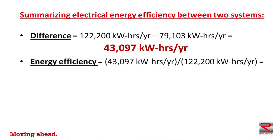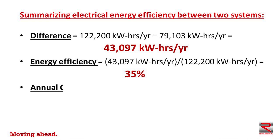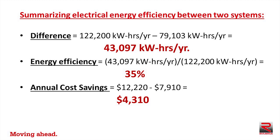Dividing that difference by 122,200 yields an energy efficiency improvement of thirty-five percent. The annual cost savings is the difference between the two annual figures: $12,220 minus $7,910 equals $4,310 per year.